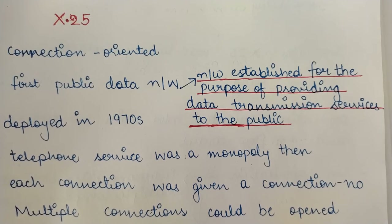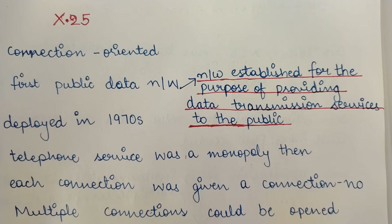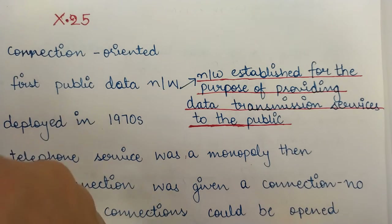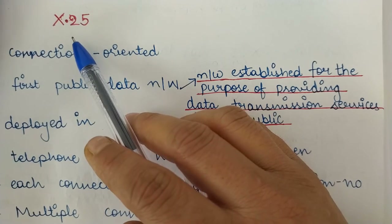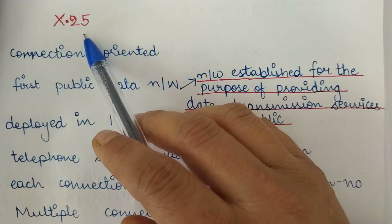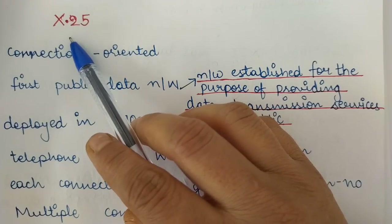Hi all, students. Today's video is a continuation of our previous video where we studied example networks, including ARPANET, NSFNET, and the internet, and the architecture of the internet. We will continue with example networks and see one more example network: X.25. Today we will be discussing X.25 and Frame Relay.